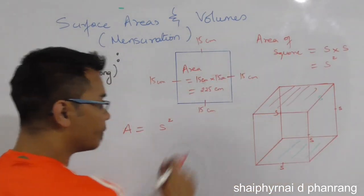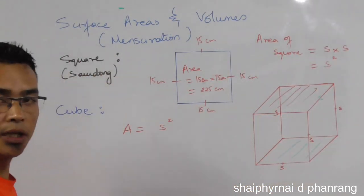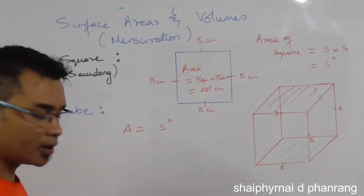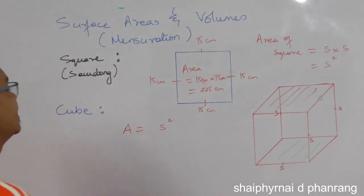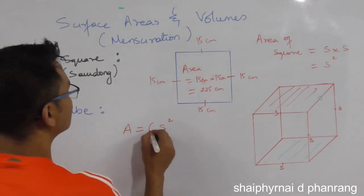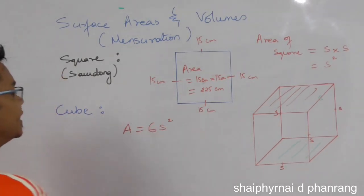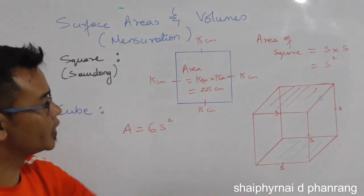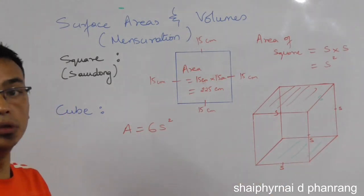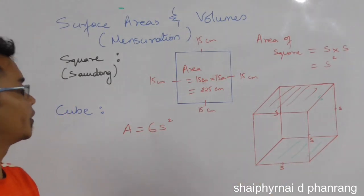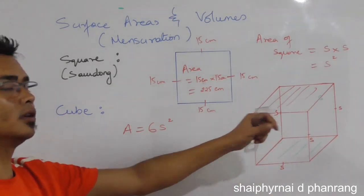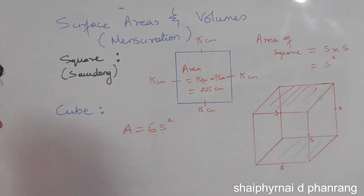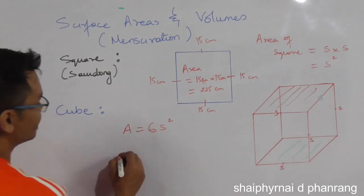We are going to write the T and this is the third row. So if you have to write the square, you will write the square. Then the area of a cube is 6s squared. You have to write the cube, but the area is 6s squared.